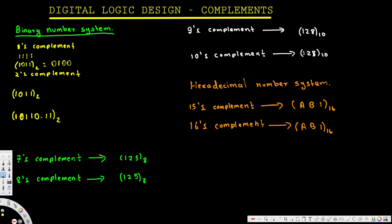Now to find the two's complement, there are two ways. One approach is that when we have the one's complement, we increase the last number by one. So subtracting: one minus one is zero, one minus zero is one, one minus one is zero, and two minus one is one. There's another way — you can add one to the last digit of the one's complement, and that also gives you the same answer.